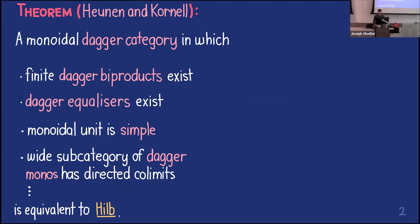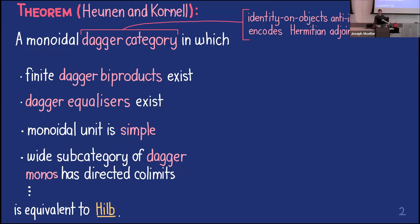What I'm going to tell you fits into the framework of this result by Chris Honan and Andre Cornell from a few years ago, which I think is quite a surprising result. It's a characterization of the category of Hilbert spaces and bounded linear maps in terms of axioms that are quite natural in a category theory setting. It says that a monoidal dagger category — if you don't know what a dagger category is, it's a category with an identity-on-objects anti-involution, a contravariant endofunctor — encodes the Hermitian adjoints of bounded linear maps as structure on top of the category.